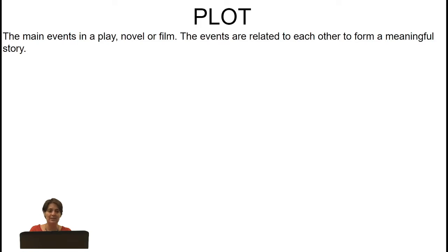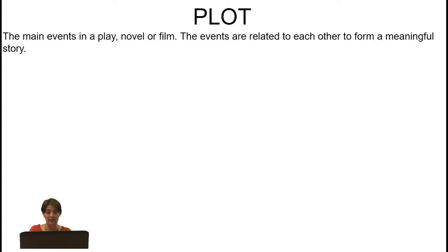Plot is the main events in a play, novel, or film, carefully related to each other to form a meaningful story. Much of what happens in your life is simply a series of events — the fact that you stood on the cat doesn't have a deeper meaning. But if you were writing a novel or play, a good author would give that event a deeper meaning for the character, implying something about their future. All events in a play are deliberately placed to create meaning and link to themes.